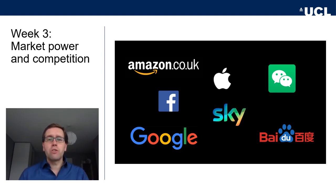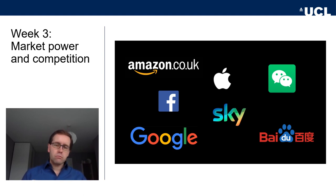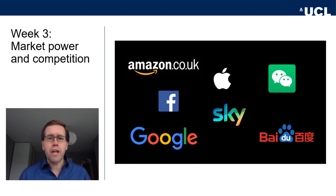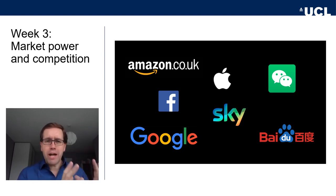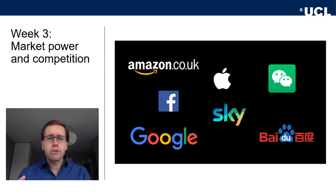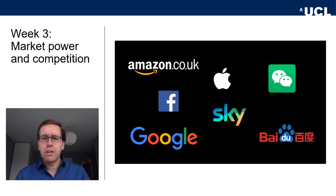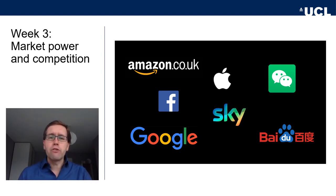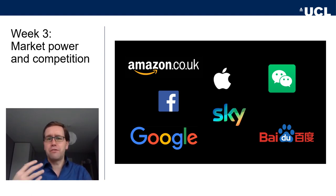Many of us are tied into what these companies call an ecosystem — be it Microsoft, Google and Android, or Apple. It basically means you have your MacBook, you have an iPhone that works well with it, you have to use the App Store to download your software on the iPhone, and you're using Apple cloud storage. You are tied into an ecosystem that combines different devices and different services.